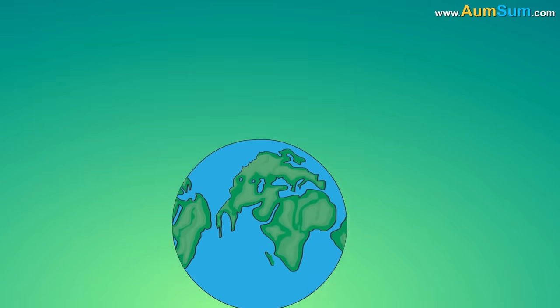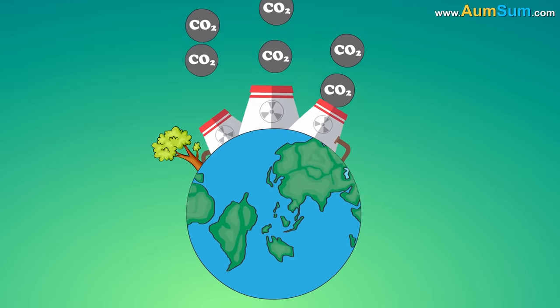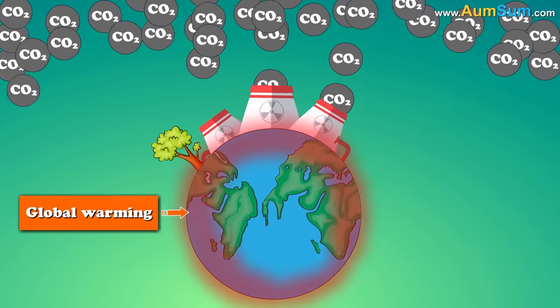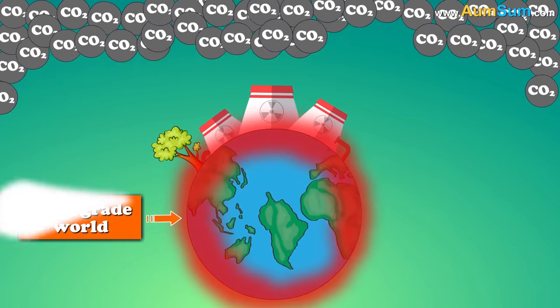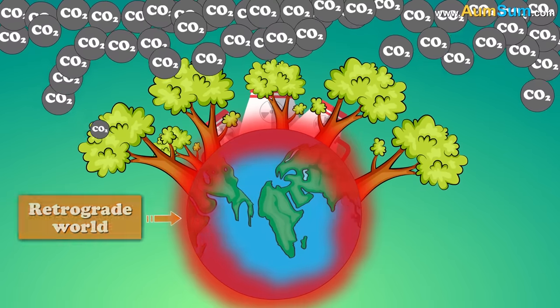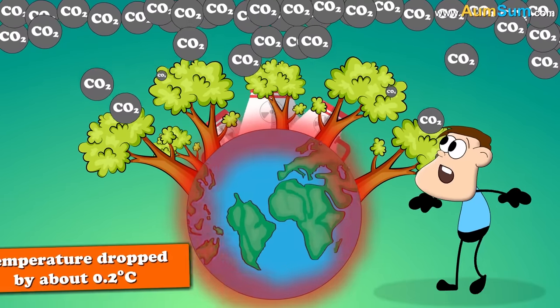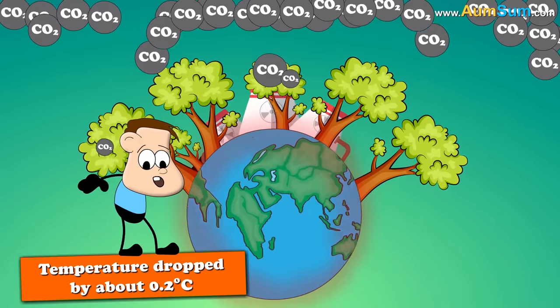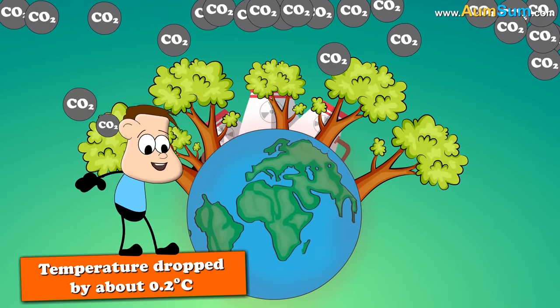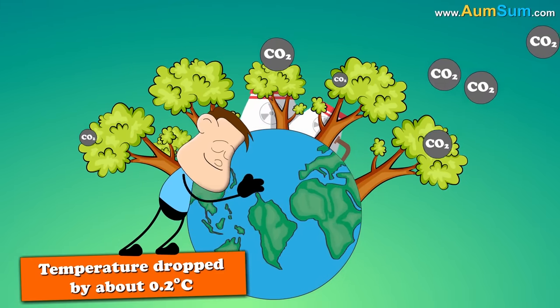Secondly, at present, rising level of carbon dioxide is contributing to global warming. But in the retrograde world, with more trees to absorb carbon dioxide, the global mean temperature dropped by about 0.2 degrees Celsius. Thus, considerably lowering the effects of global warming.